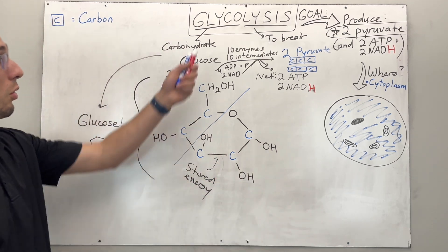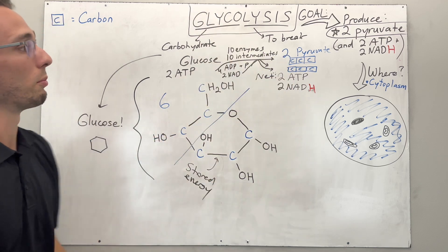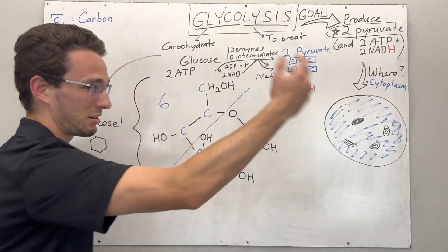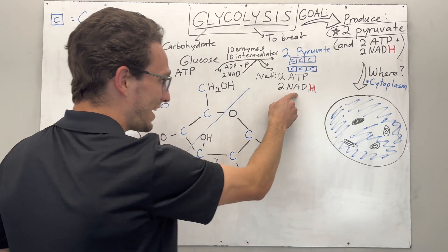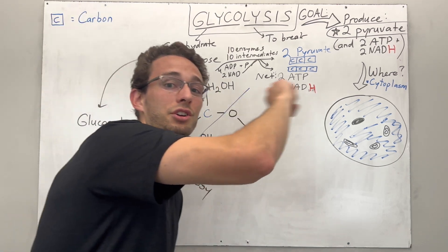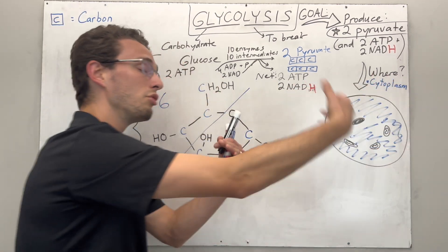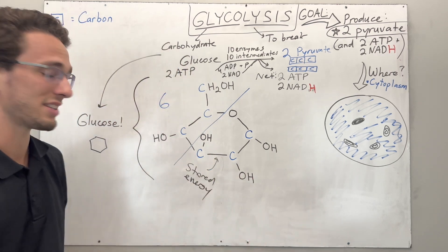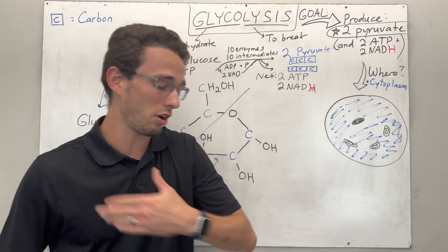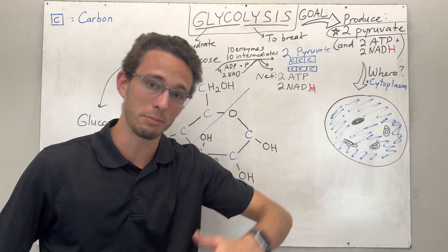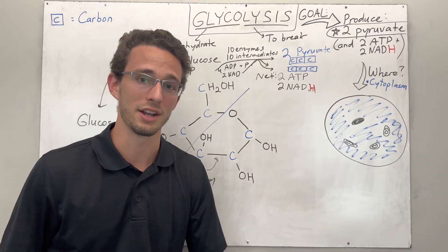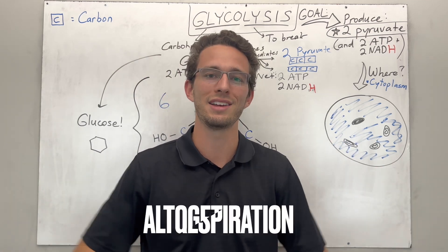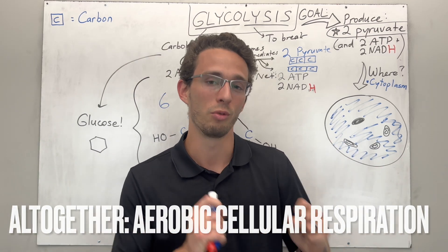So what's happening here? We're breaking down a sugar, we're producing pyruvate which goes into the citric acid cycle, the ATP is going to be used up by the cell, and the NADH is going to go into the electron transport chain to make more ATP. There's a lot of interplay between these intermediates, and hopefully between this video and all the other videos linked below and above, you get a whole picture of this whole process known as aerobic cellular respiration.